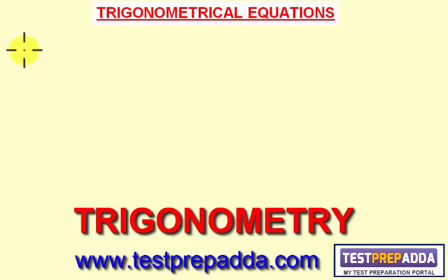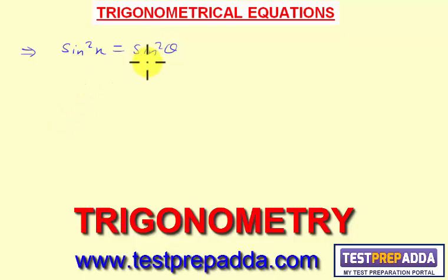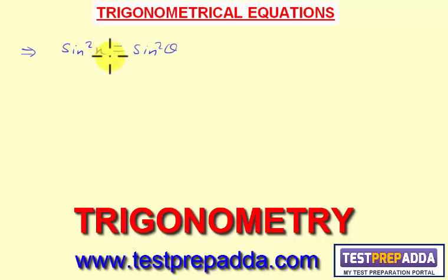If it is given that sin²x = sin²θ, then what will be the general solution? Here x is the unknown angle and θ is the known angle. We have to get x in terms of θ.